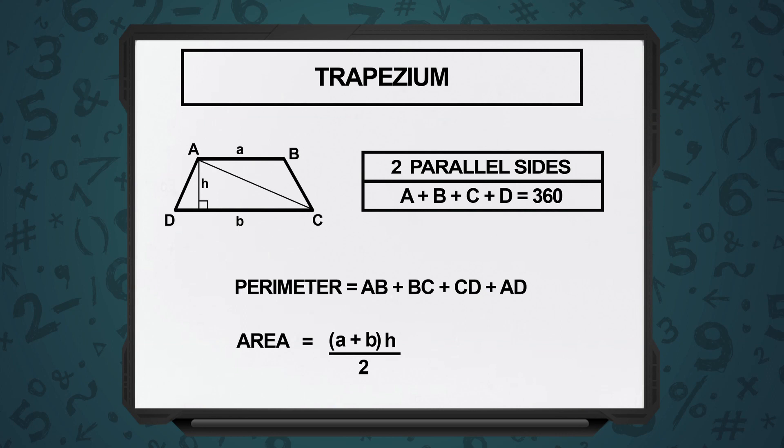We know that the formula for area of a triangle is half base into height. So in this case, once we have split it up into two triangles, you get area of one triangle as half into A into height H, and you get the area of the other triangle as half into B into the same height H.